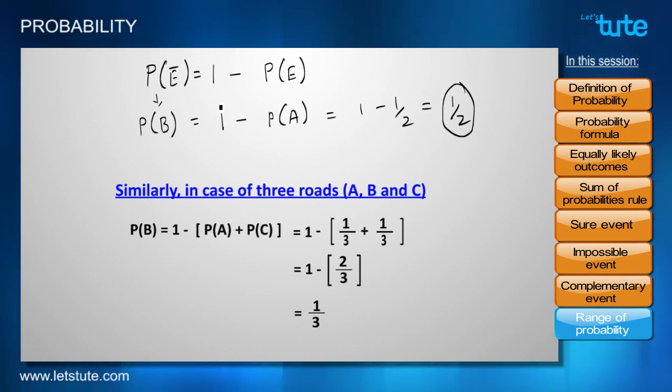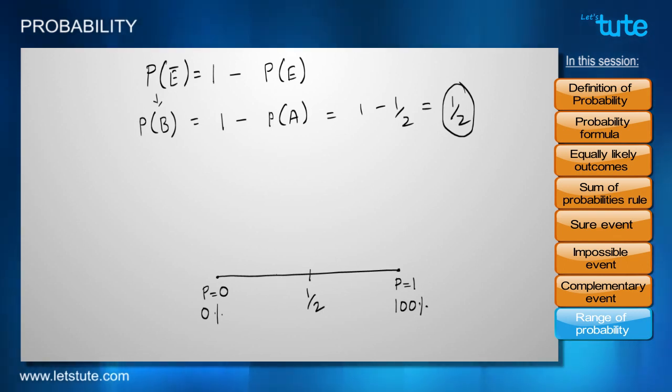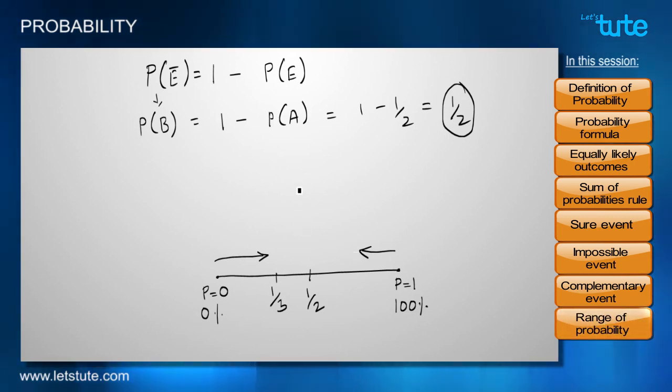So what do we imply from all of this? We imply that there are two extremes of probability. The lower limit is what we say the probability of 0, where there is a 0% chance of anything happening. And the highest limit is the probability of 1, where there is a 100% surety. Also, probability of an event can lie between 0 and 1, just like in previous case it was 1 by 2 in case of 2 roads, it was 1 by 3 in case of 3 roads, which means either it will be more than 0 or it will be less than 1. We can show the same situation in a simple mathematical expression: probability of an event P(E) is greater than or equal to 0 and less than or equal to 1. So this is how we can actually indicate probability of an event in general.